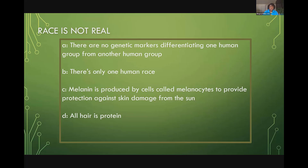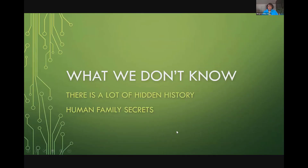There's a lot of stuff that we know, but we're not teaching it in school and we're not telling our children about it, which is extremely important. There are some things we know even though we don't teach them. Then there are the things we don't know, because there's a lot of hidden history around this issue that we call race. We've talked here in the past about family secrets.